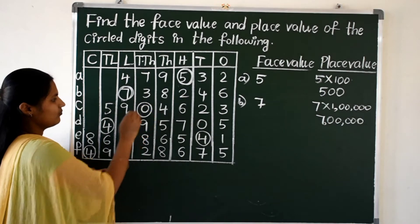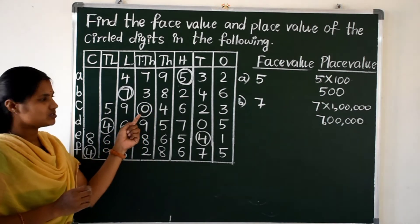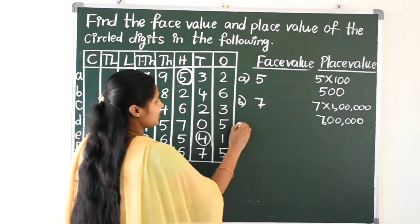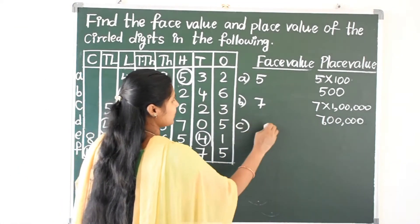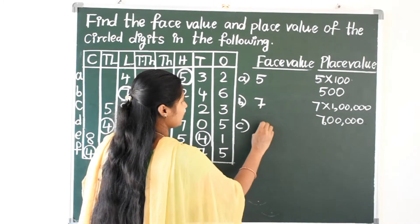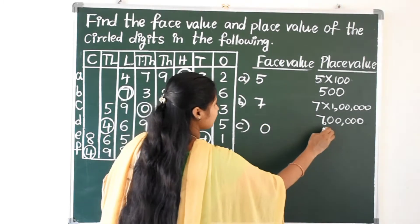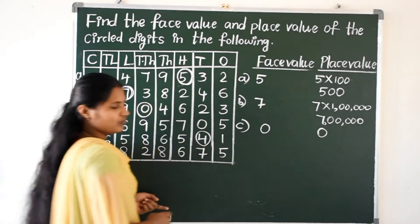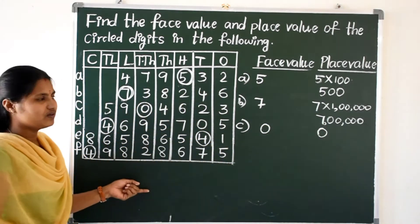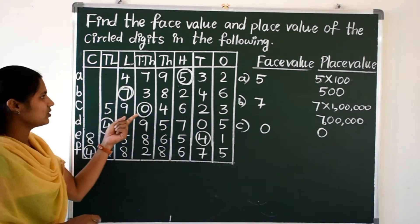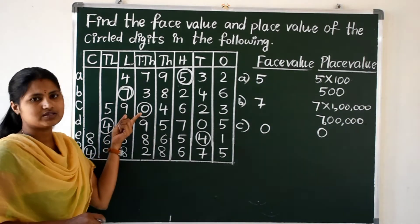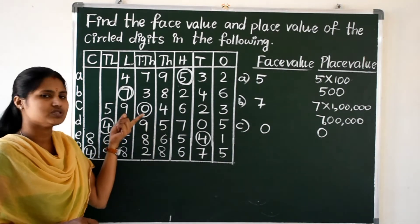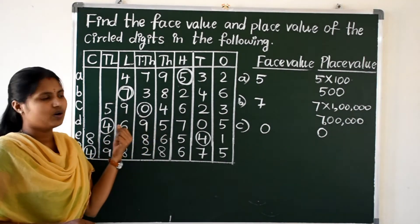Here we have to find the face value and place value of zero. The face value of zero is zero, and the place value of zero is also zero. Whenever zero comes, the place value and face value are both zero.